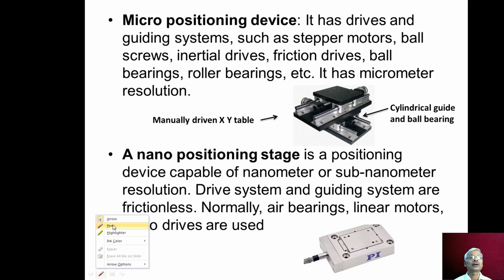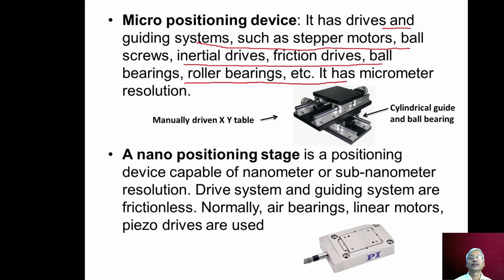Micropositioning devices have drives and guiding systems such as stepper motors, ball screws, inertial drives, frictional drives, ball bearings, and roller bearings. These devices have micrometer resolution — like 0.1, 0.5, or 1 micrometer — depending upon the design. In this diagram we can see an XY micropositioning table with two movements in the X and Y directions, on which workpieces can be mounted directly or using a suitable fixture.